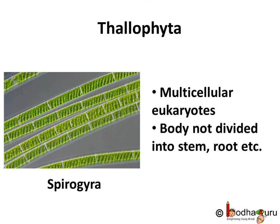We already know that plants have the shoot and a root system. But there are a few multicellular plants whose body does not have well-differentiated distinct components like leaves, stems and roots. These are categorized in the division Thallophyta. The plants in this group are commonly called algae. These plants are mostly aquatic — for example, Spirogyra, Ulothrix, etc. Plants belonging to this division are called Thallophytes.